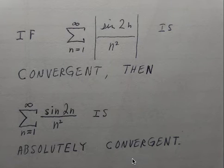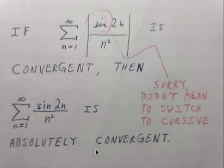So what we're going to do is take the absolute value of the terms in the summation. Based on the definitions of absolute convergence, if the summation of the absolute value of sine of 2n over n squared is convergent, then the equivalent summation without the absolute values is absolutely convergent. I drop back and forth between cursive and regular occasionally, so apologies in advance.